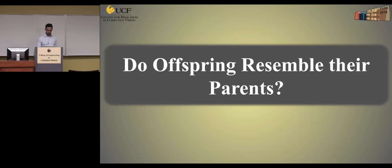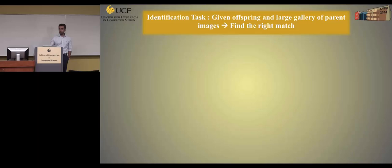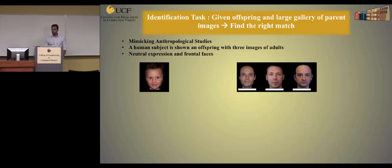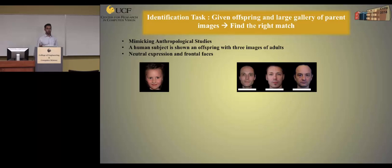Now let's get back to our questions. The first question was: do offspring resemble their parents? To answer this, we look at the identification task — given an offspring image and a large gallery of parent images, we are interested in finding the right match for the given query image. This mimics anthropologists' studies, where a human subject was shown an image of a child and three adult images and asked to find the right parent. In those studies, all images were taken under controlled conditions with neutral expressions and frontal faces.